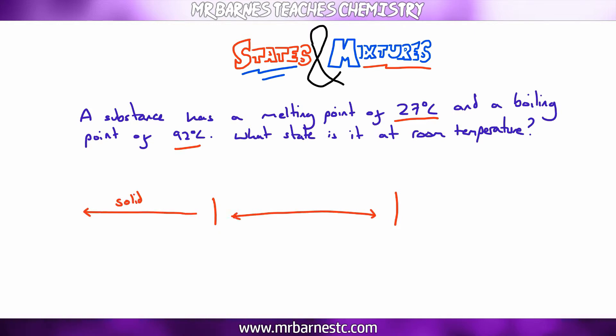Solid, liquid, and then gas on the right hand side. And I put some lines in between the three states. The line on the left, that is your melting point, 27 degrees. The line on the right, that is your boiling point, 92 degrees.